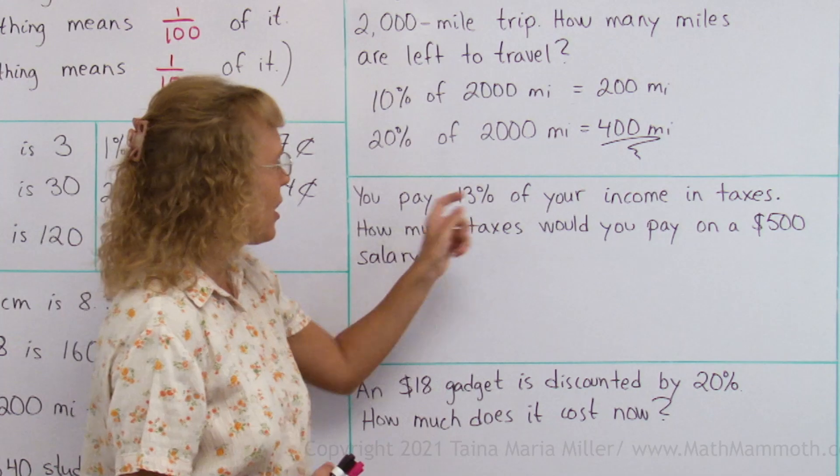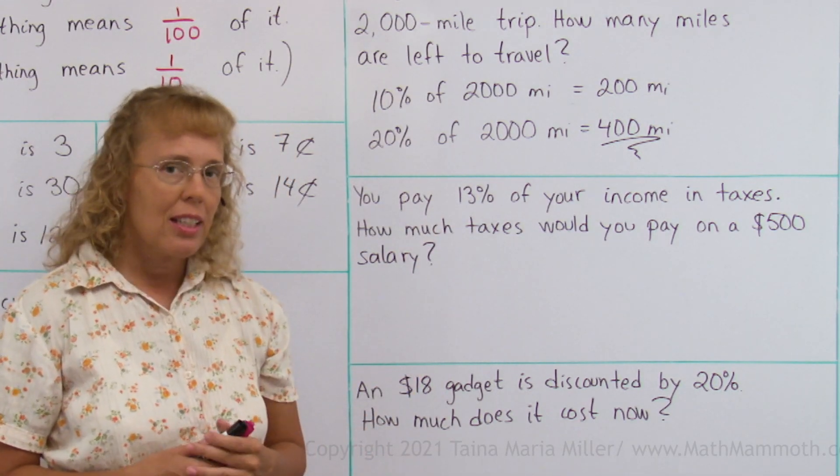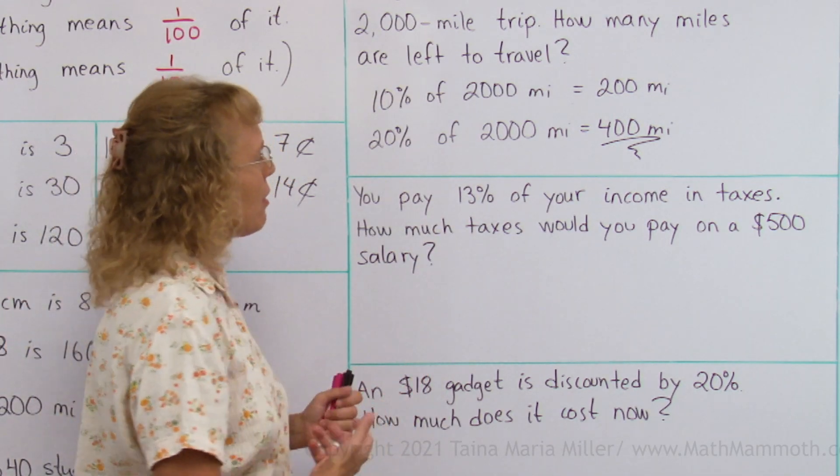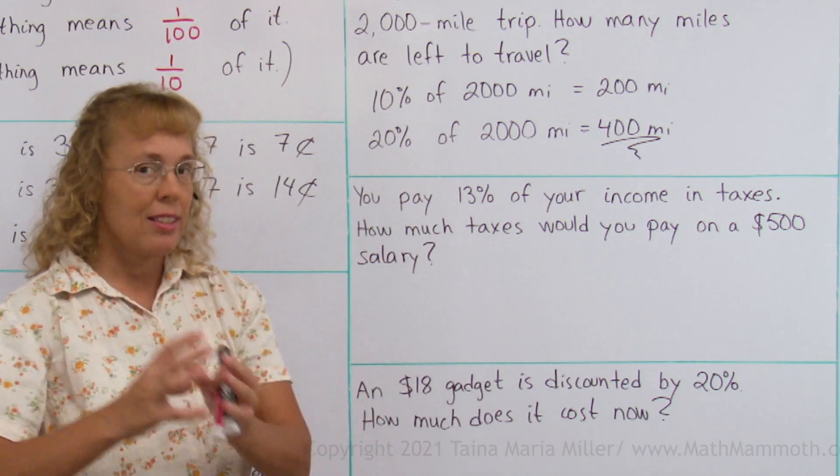Alright, 13% looks like a difficult odd number, right? But we can break it down. We can think of it as 10% and 3%.